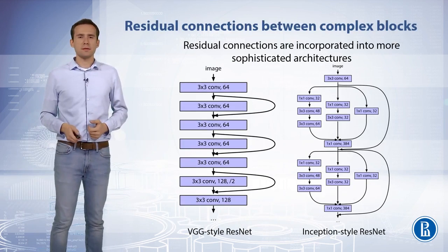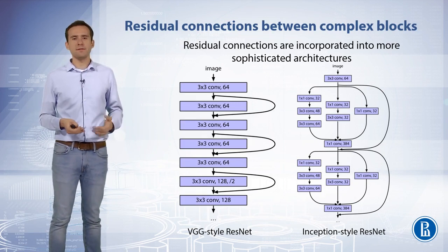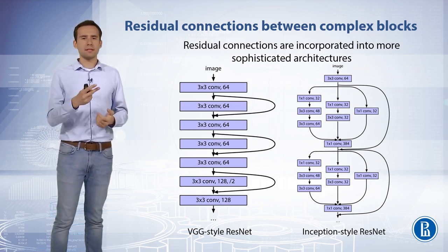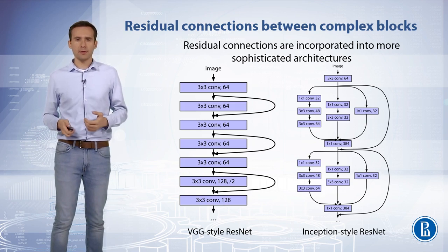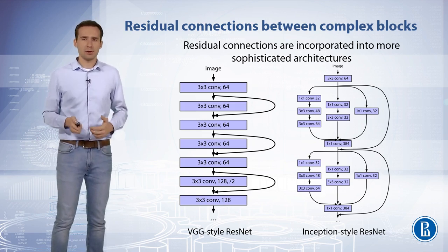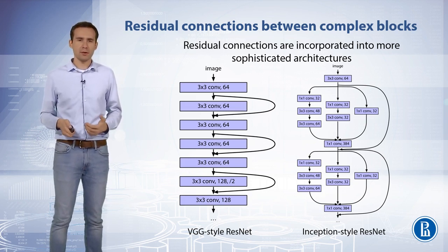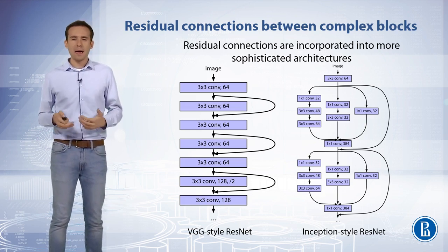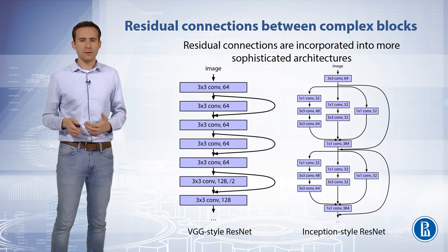Residual connections can be incorporated not only into simple architectures such as the VGG architecture, going from one stack of convolutional layers to another, but also into more sophisticated convolutional blocks. One example is the Inception architecture, which consists of such blocks and has been shown to achieve very good performance at relatively low computational cost. The introduction of residual connections with a more traditional architecture yielded state-of-the-art performance in the 2015 large-scale visual recognition challenge.